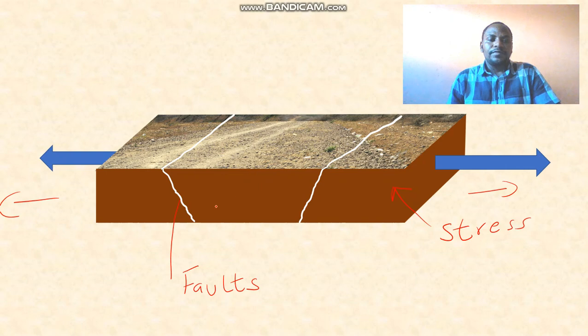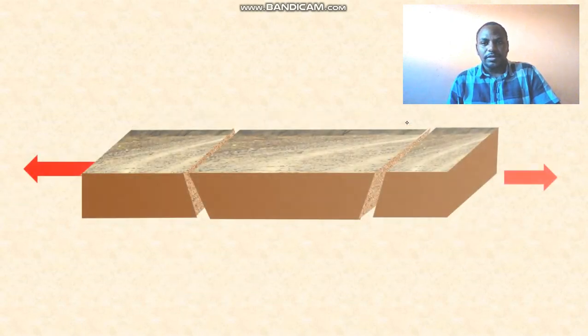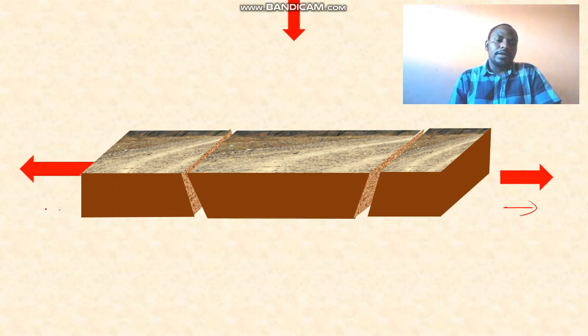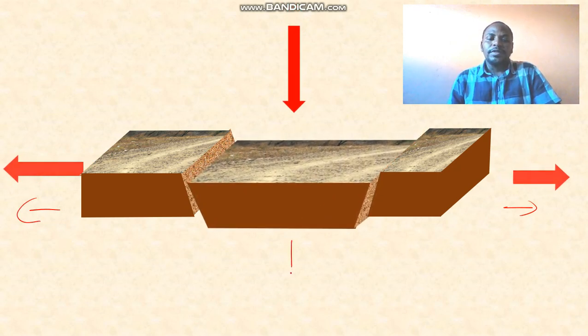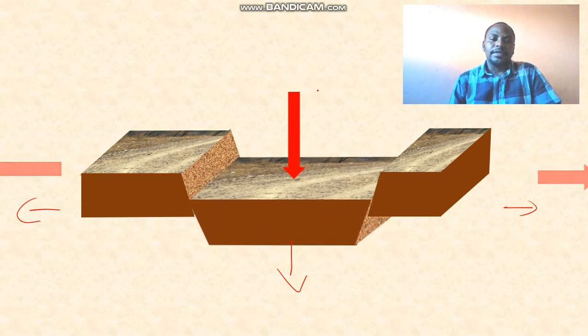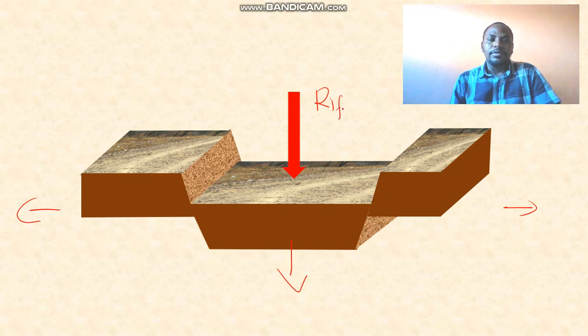Gradually the fault lines enlarge because of continuous stretching of the crustal rocks as they form very large cracks. Further stretching of the side blocks loosens the middle block of land and then it sinks downwards, hence forming a broad valley known as a rift valley.